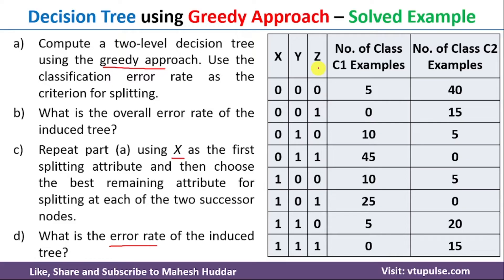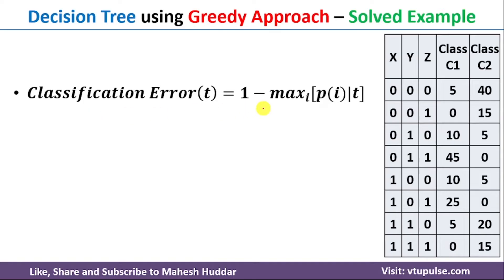How do we calculate the error rate? The classification error of the t-th attribute is always equivalent to 1 minus the maximum of probability of class i given t, for all classes — where i represents all possible classes. We need to calculate the probability of class C1 given attribute t, and the probability of class C2 given attribute t. Then we take the maximum and apply the equation 1 minus maximum to get the classification error.